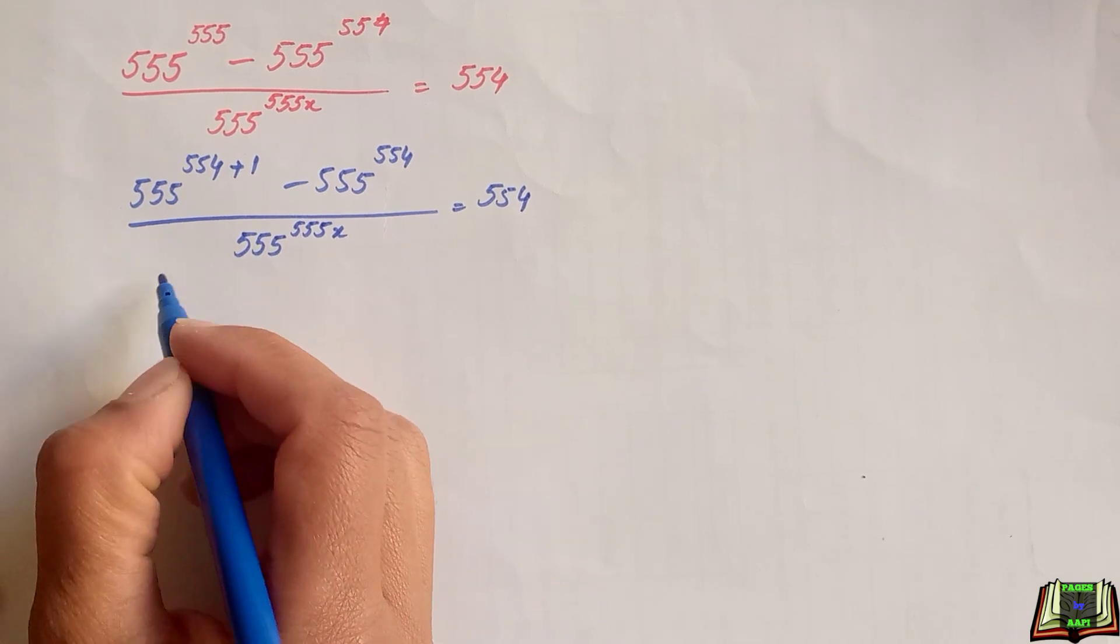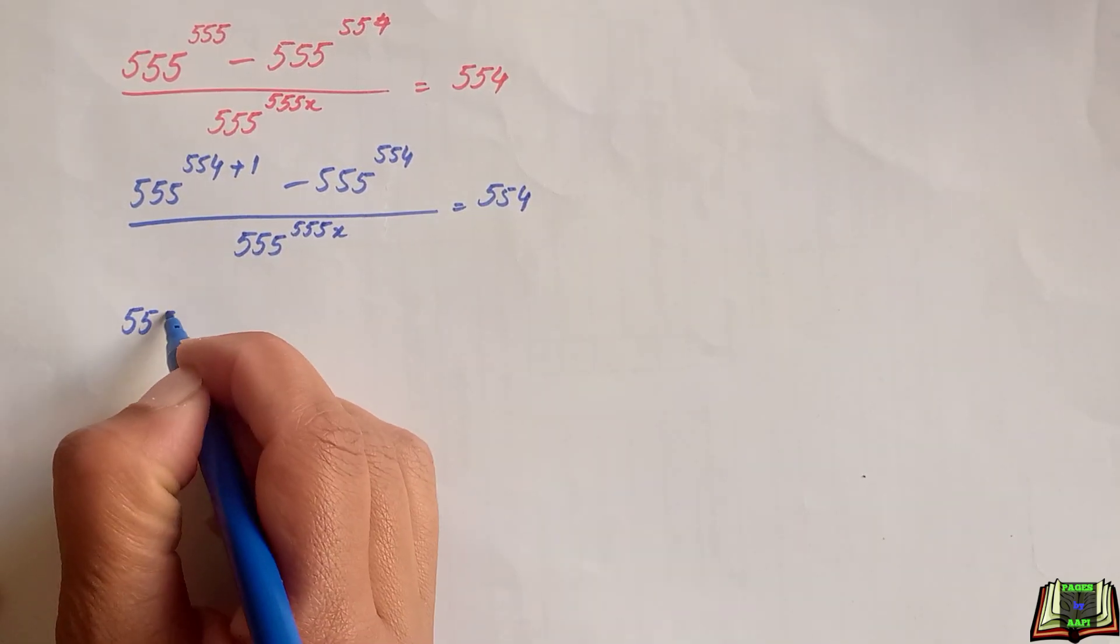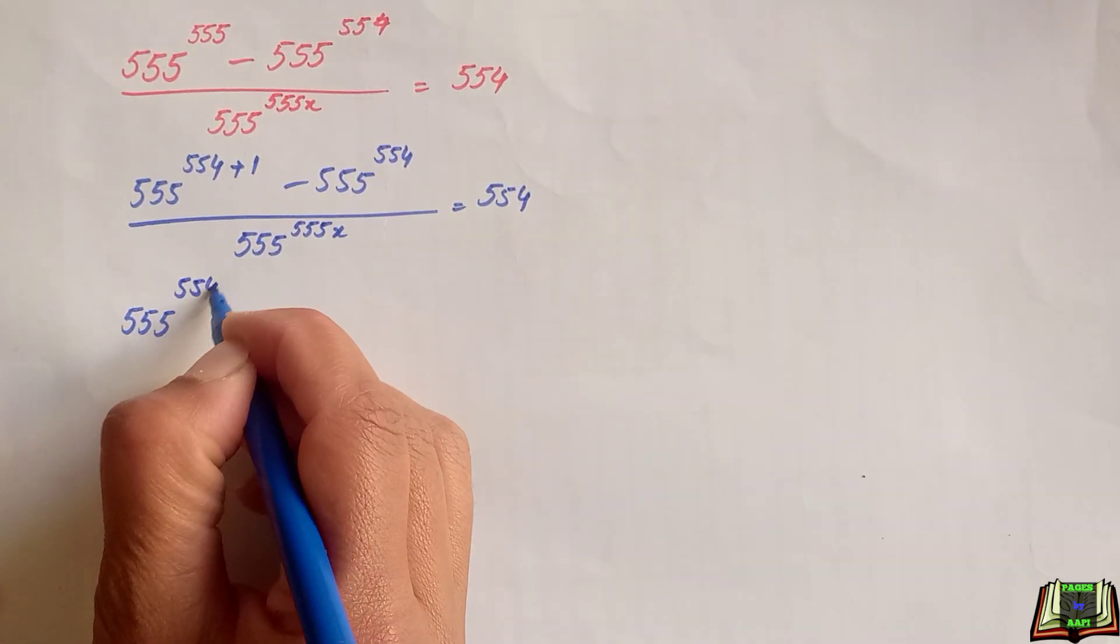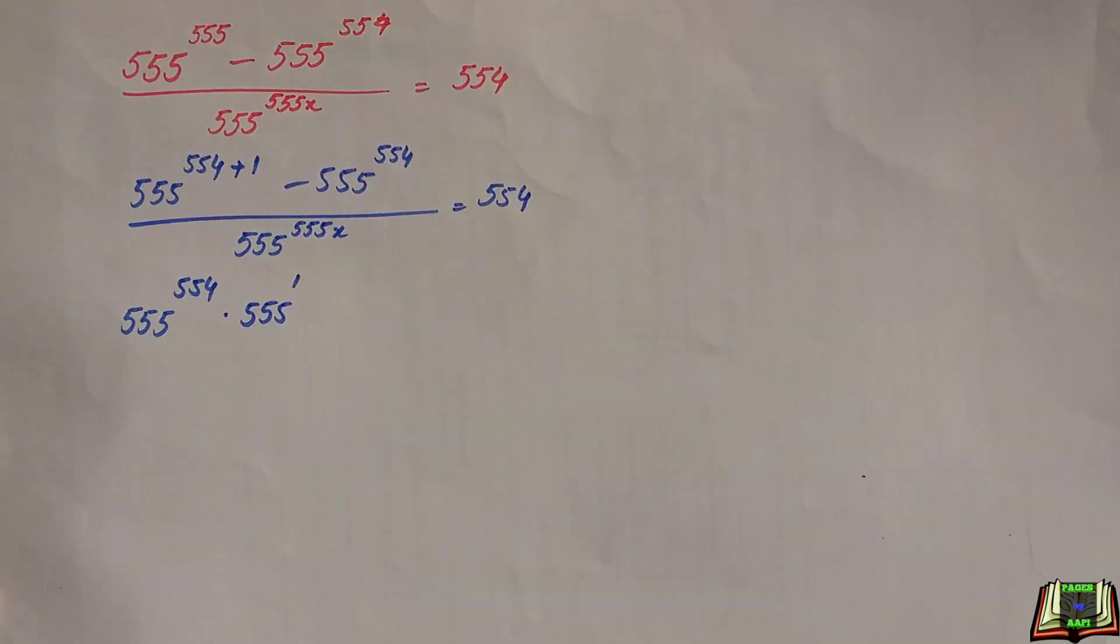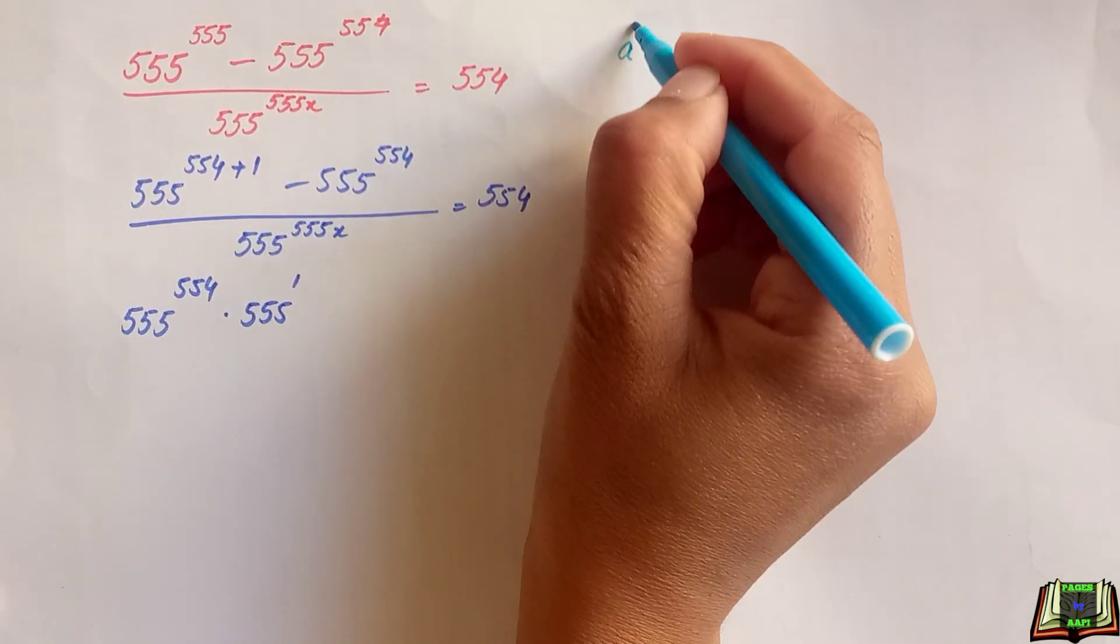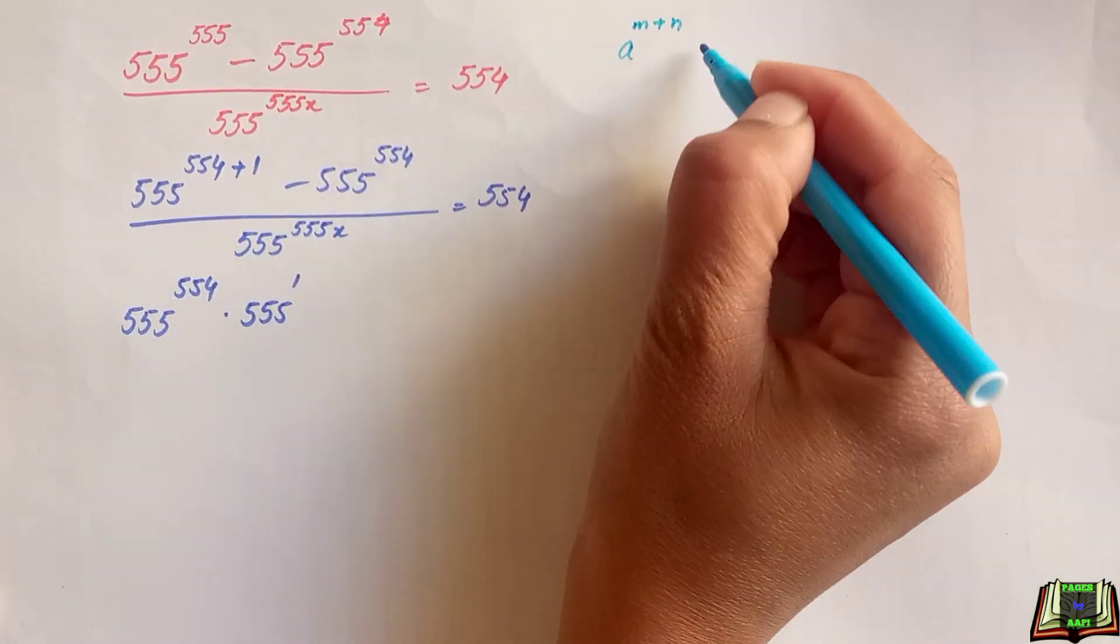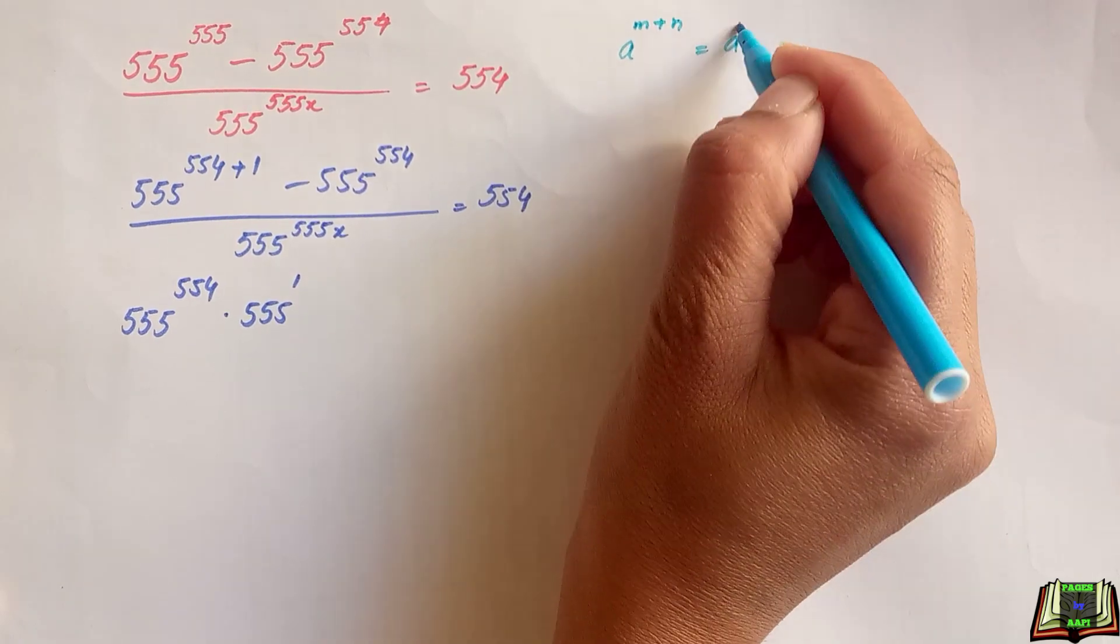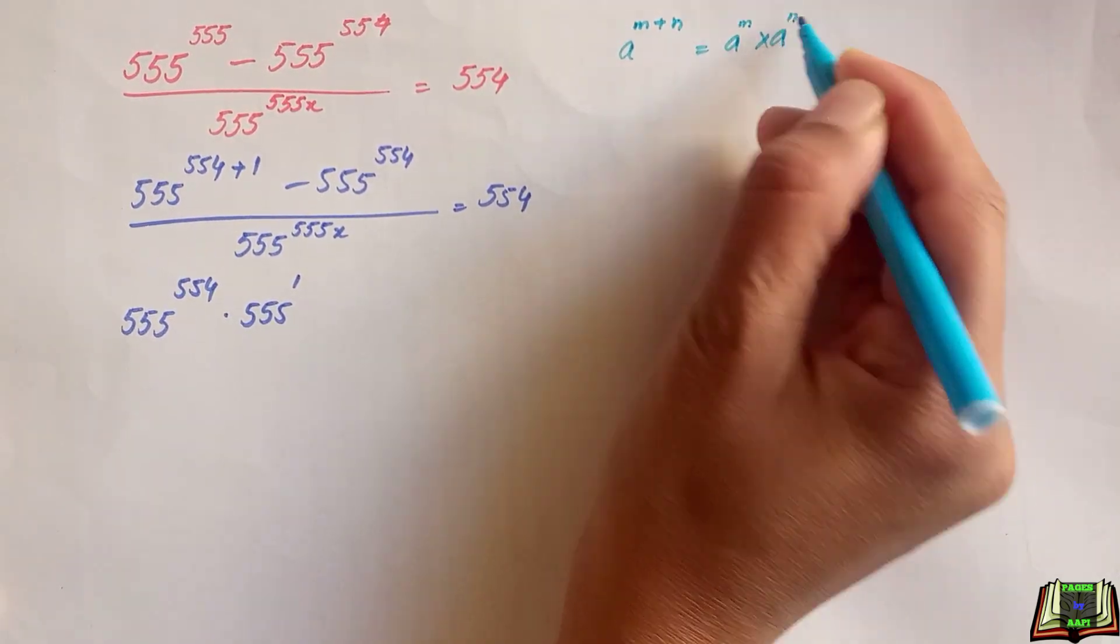Now we are going to write the power separately 555 raised to power 554 times 555 raised to power 1. Because we use product rule of exponent here that says if a raised to power m plus n we can write it as a raised to power m times a raised to power n.